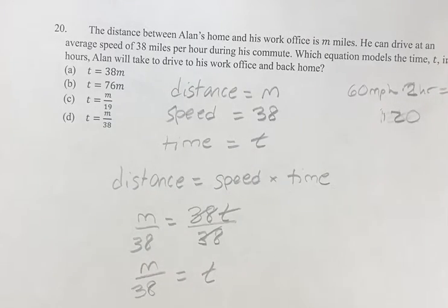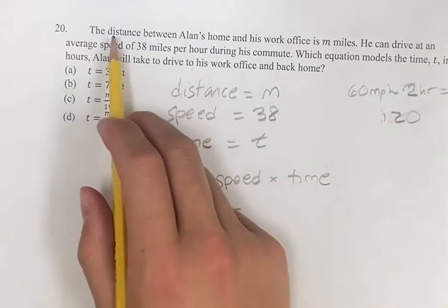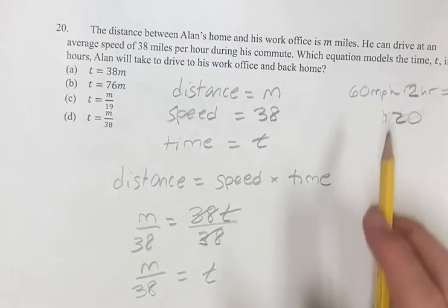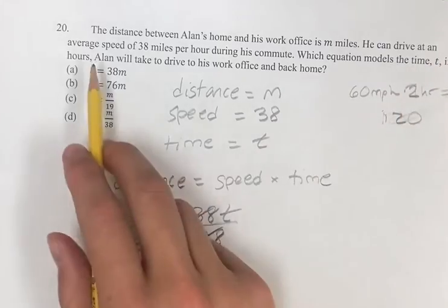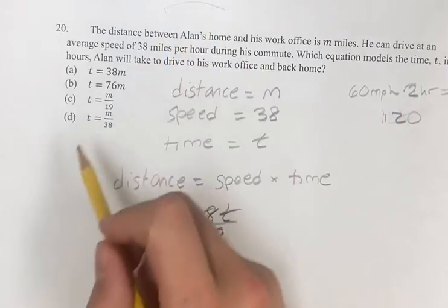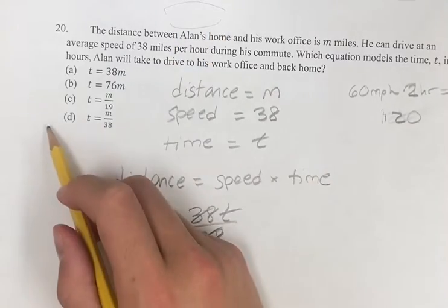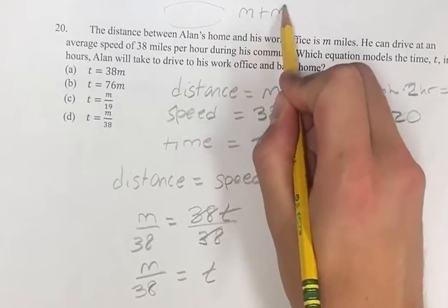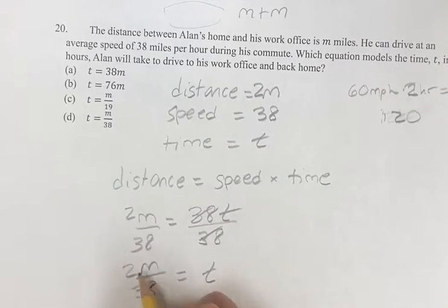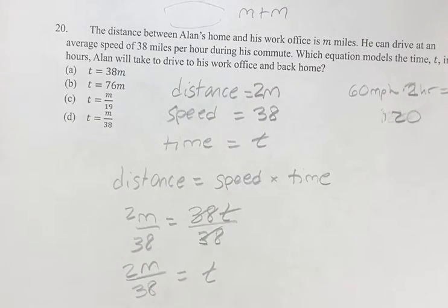And I'm actually noticing the distance between Allen's home and his work office is m miles. We're taking the time it takes for him to drive to work and back home. So to work is m miles, back home is m miles. So the total distance is m plus m. So it's 2m. It doesn't actually change anything in terms of the concept. We just have to make sure to have a 2m in there.